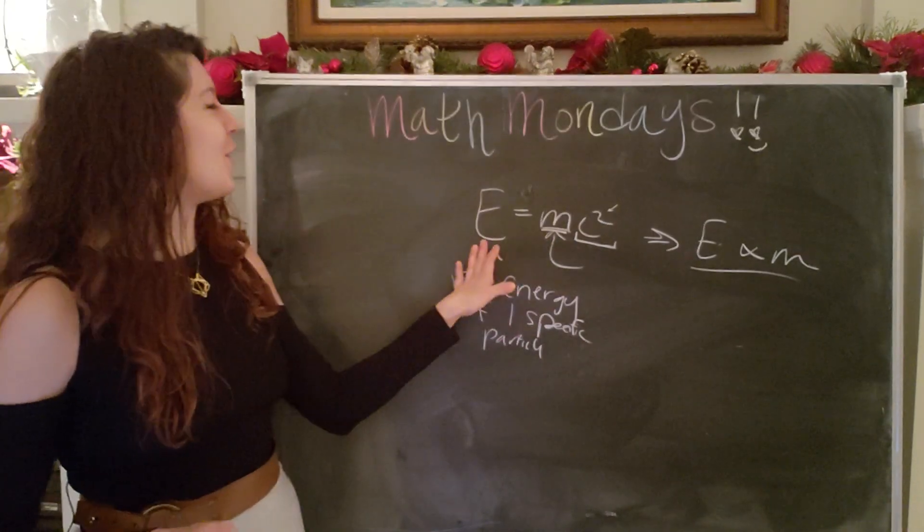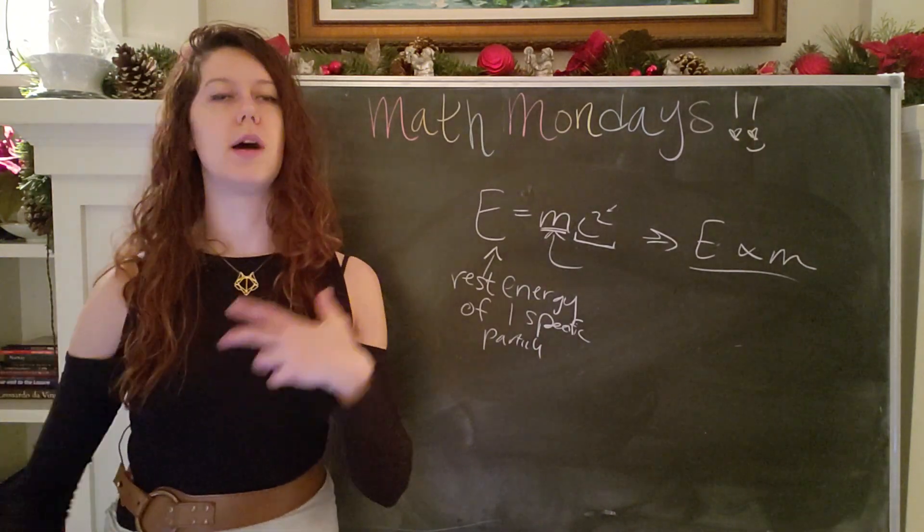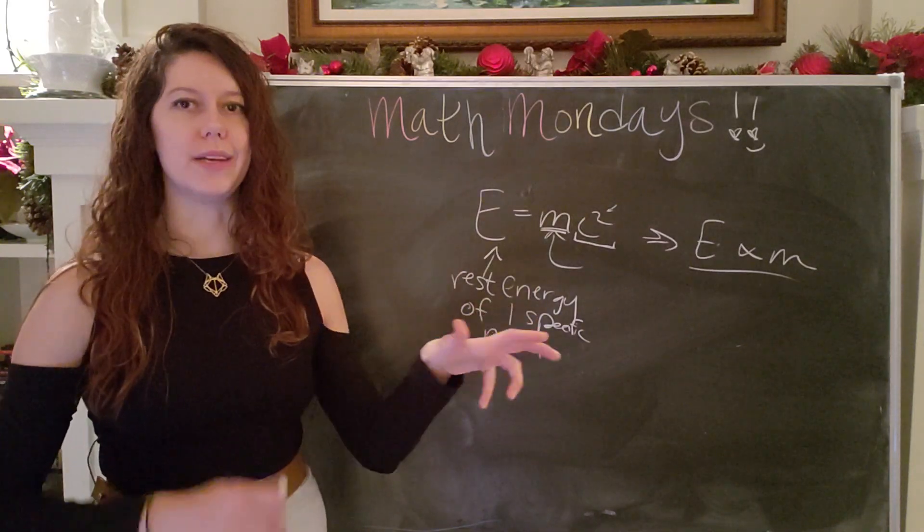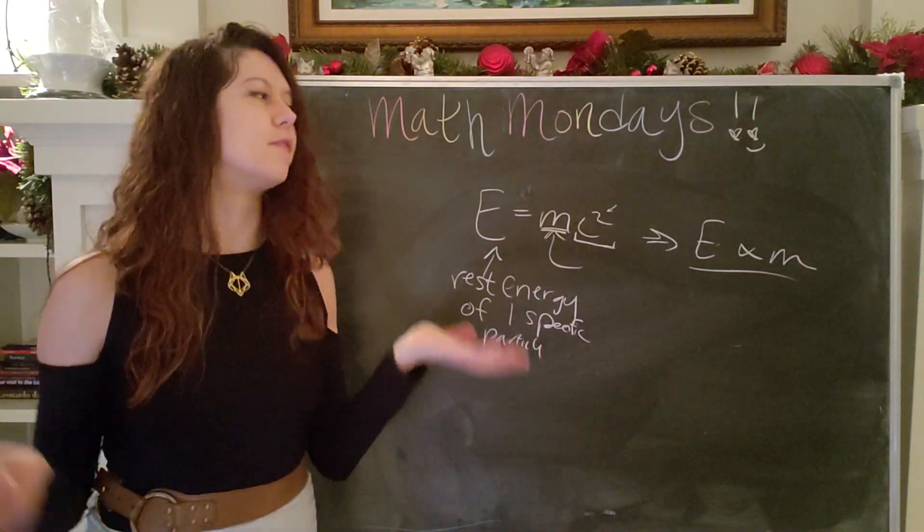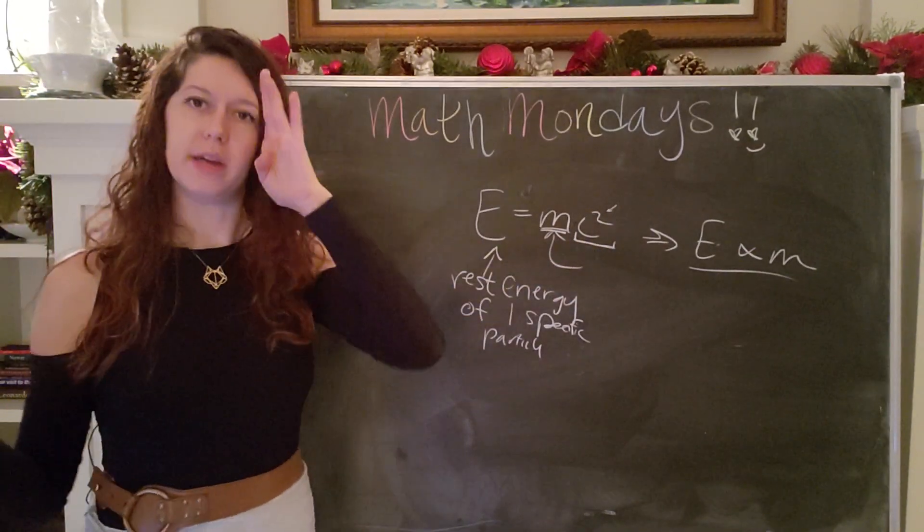Anyway, so if you ignore or remove all of the other types of energy of those particles, then you can say, okay, the rest energy, or the non-moving energy of that particle, is equal to its mass times the speed of light squared.